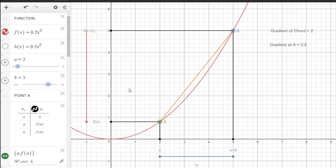So how do you find the derivative of a function? Let's consider this simple function we have here, f of x equals 0.2x squared.